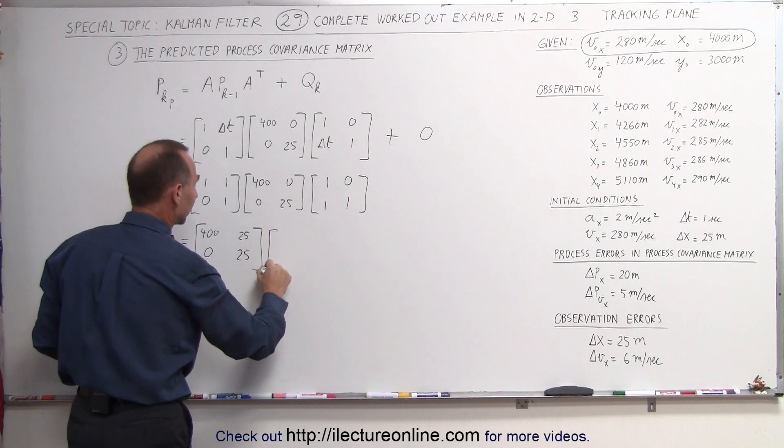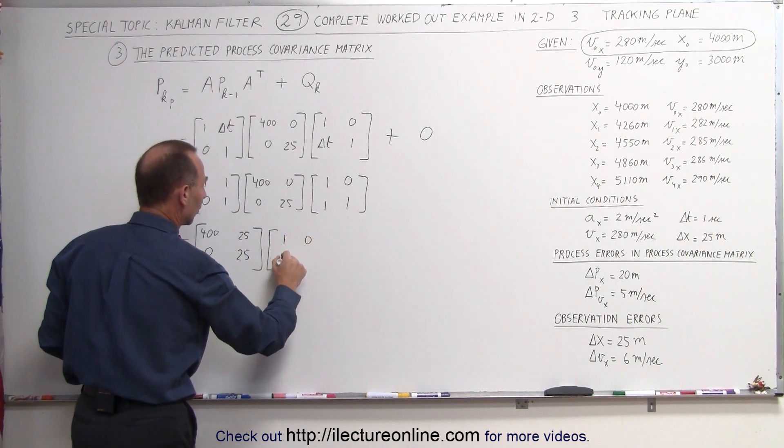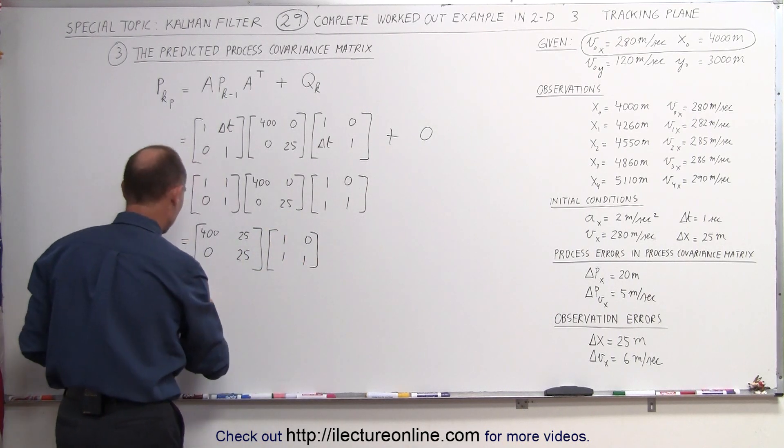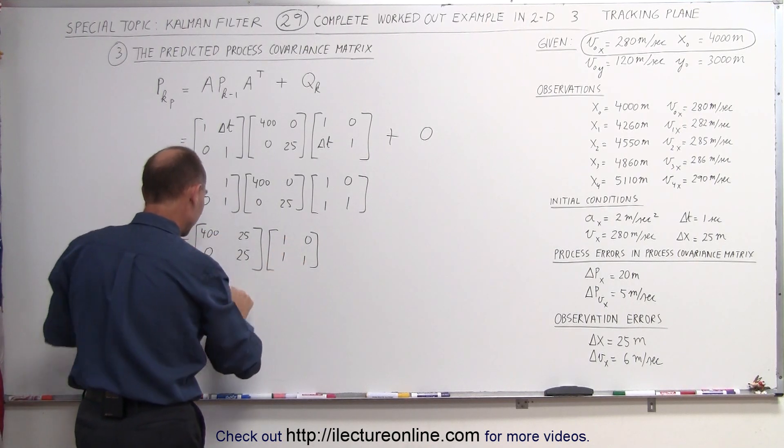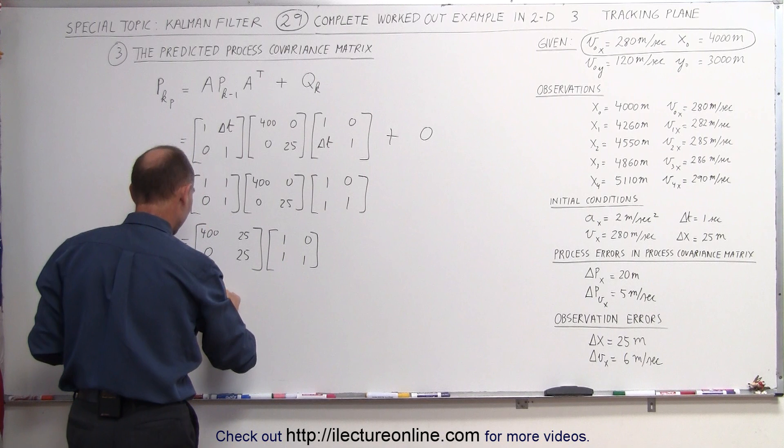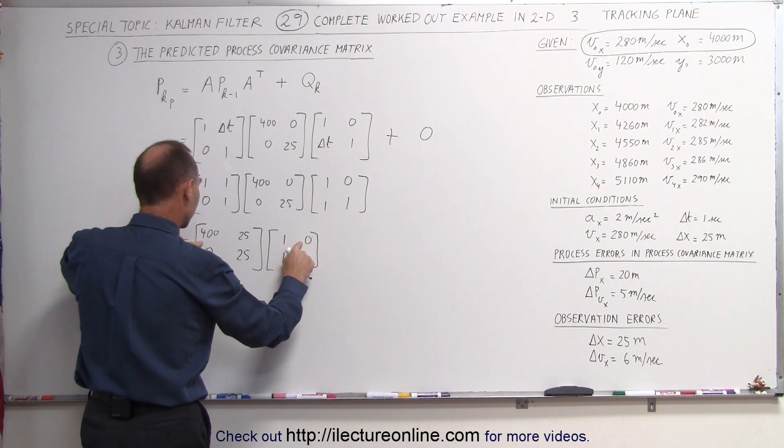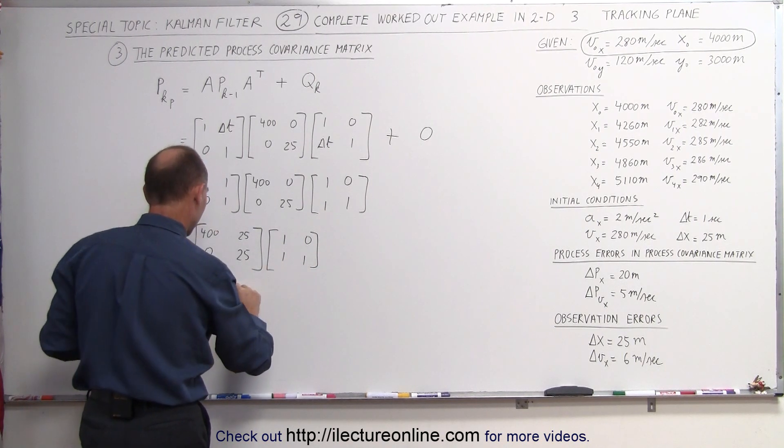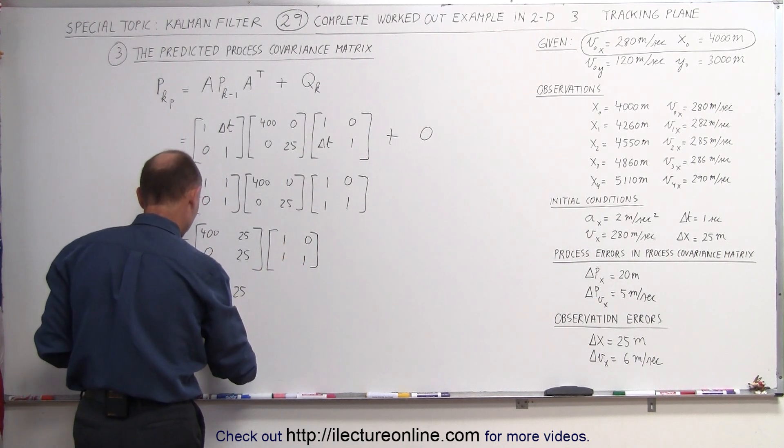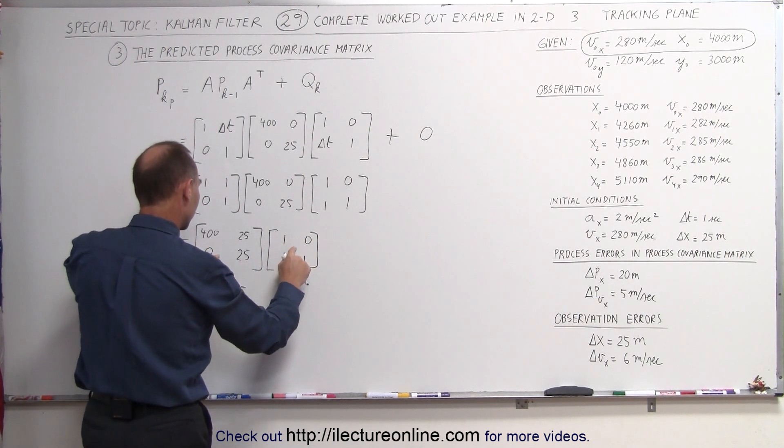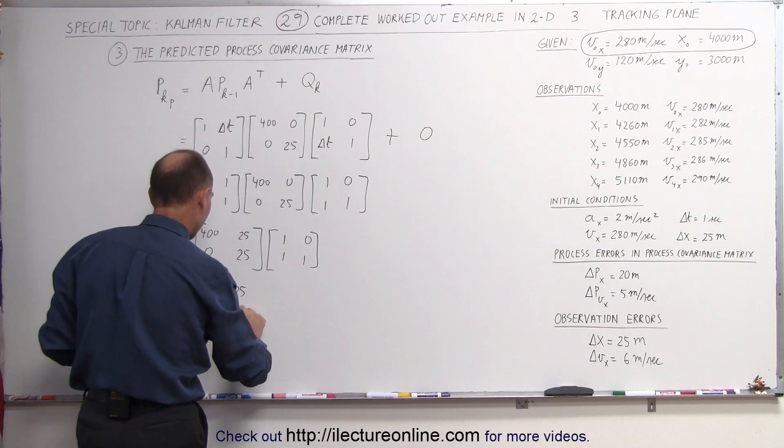We still have to multiply it times this matrix, 1, 0, 1, 1, and when we do that, we get the following. We get 400 plus 25, that gives me 425. We get 400, that's 0, plus 25, we get a 25 in here. 0 plus 25, we get a 25 in here, and 0, 25, we get a 25 in here.